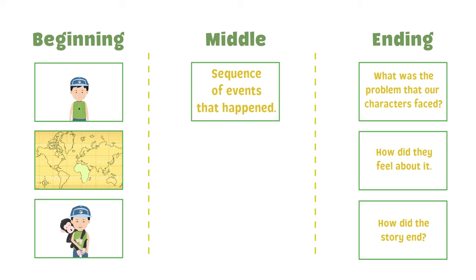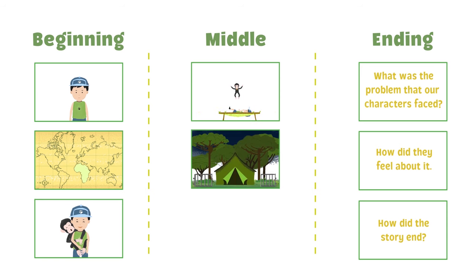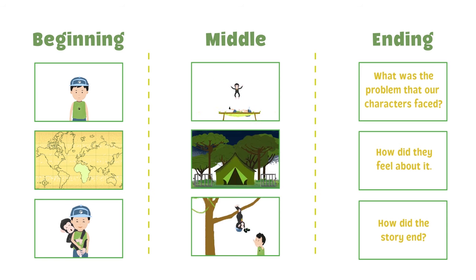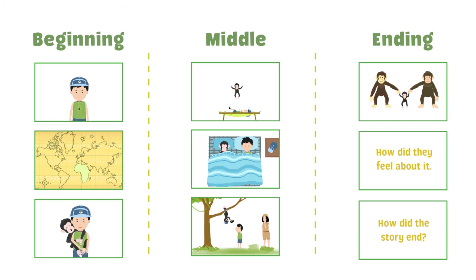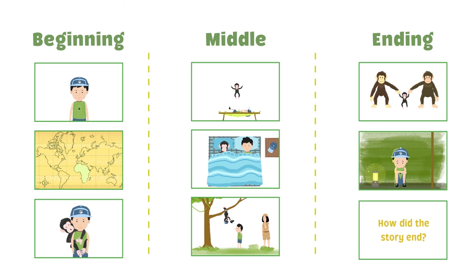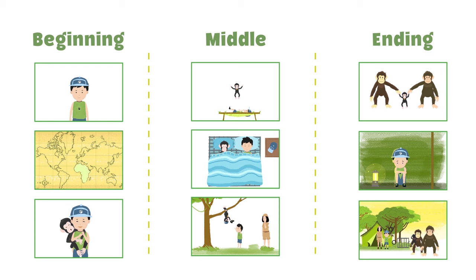The middle part of the story is when he has a lot of fun with Peanut and the days turn into months. In the end, he understands the importance of family and decides to bid goodbye to Peanut so that he can have one too.